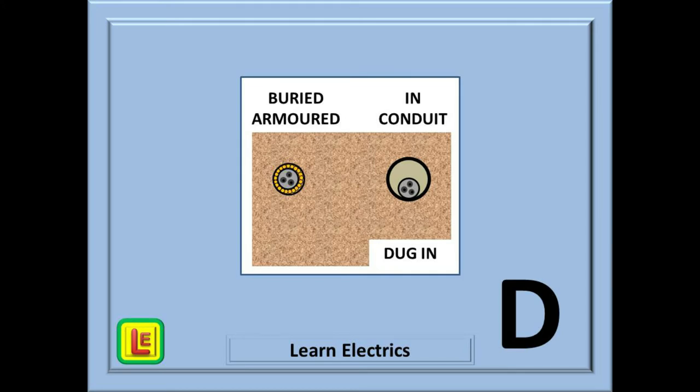On to reference method D. D is for dug in. SWA armoured cable laid directly in the soil is dug in or buried. Cables laid in the ground in conduit or ducting systems are dug in. They are all method D.